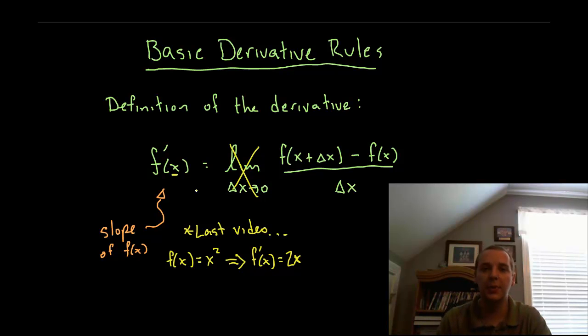And as that approximation gets better and better, this limit converges to the actual slope which is what we call the derivative. If you want some more detail on what I was just referring to there, you can watch the previous video.